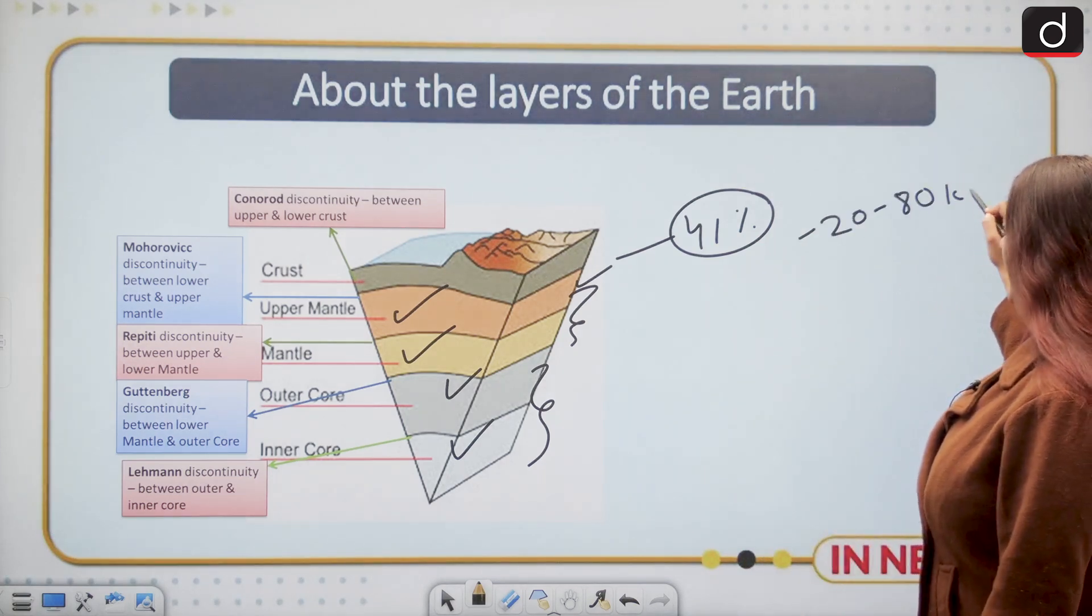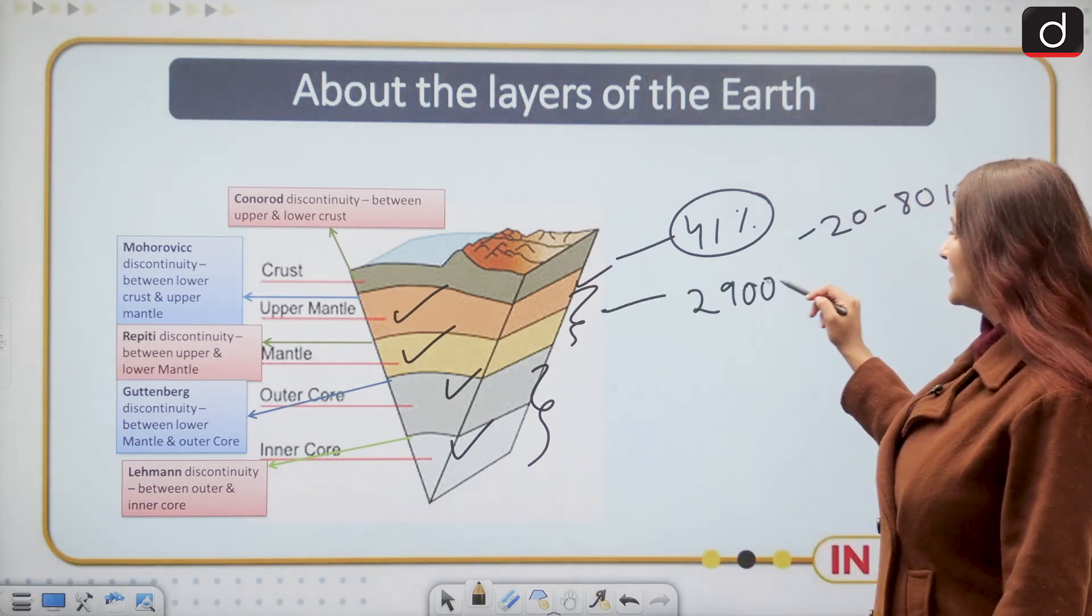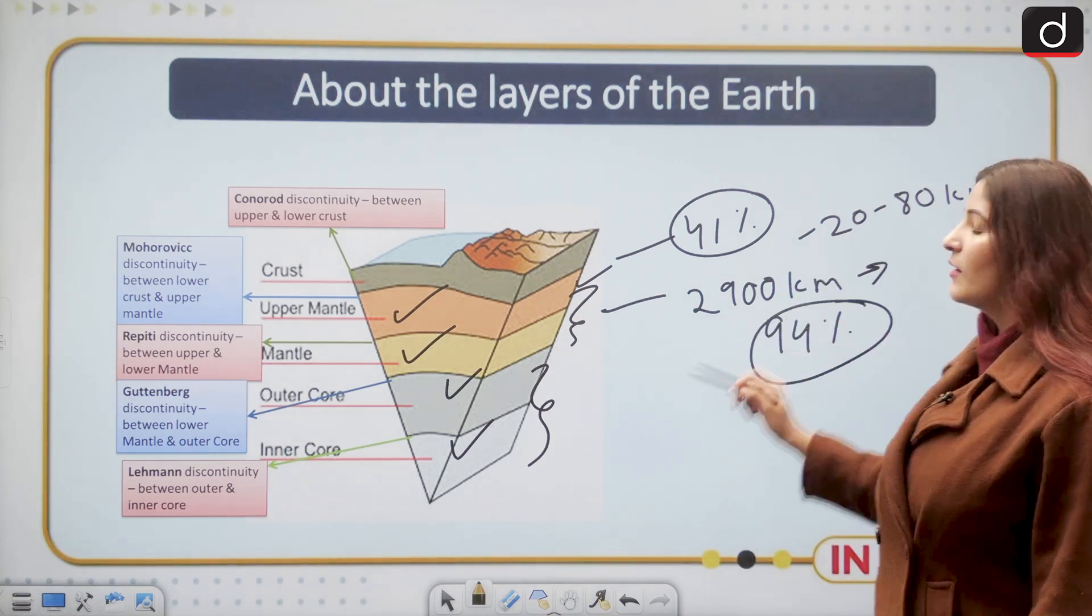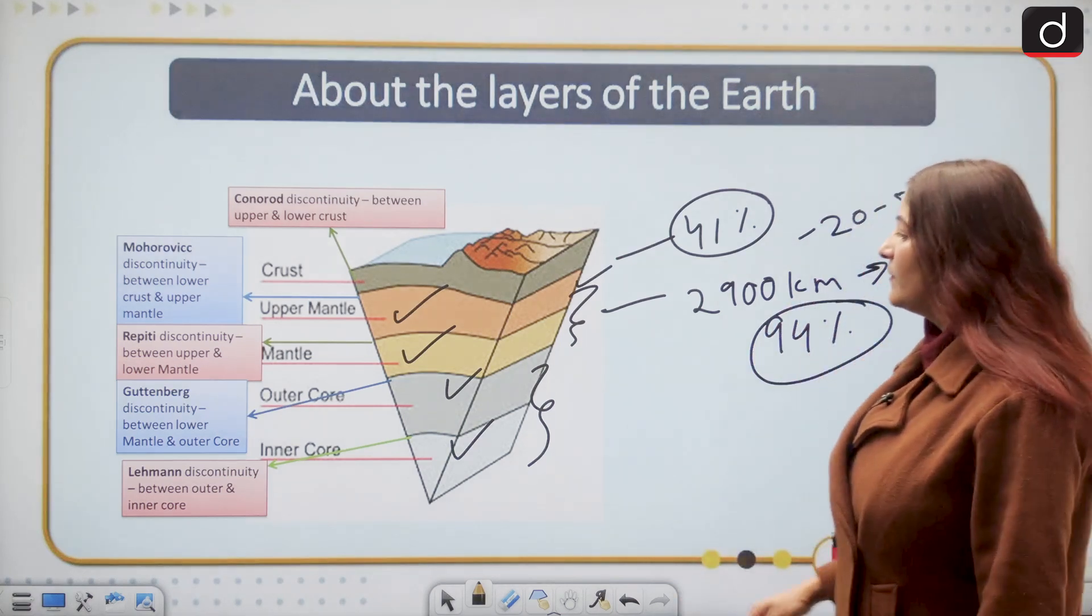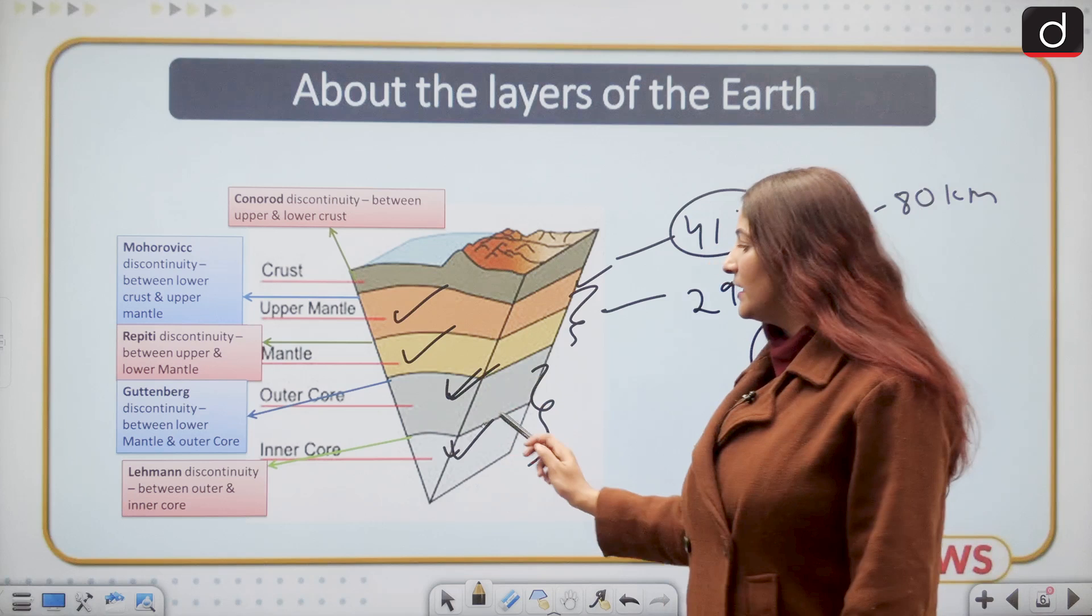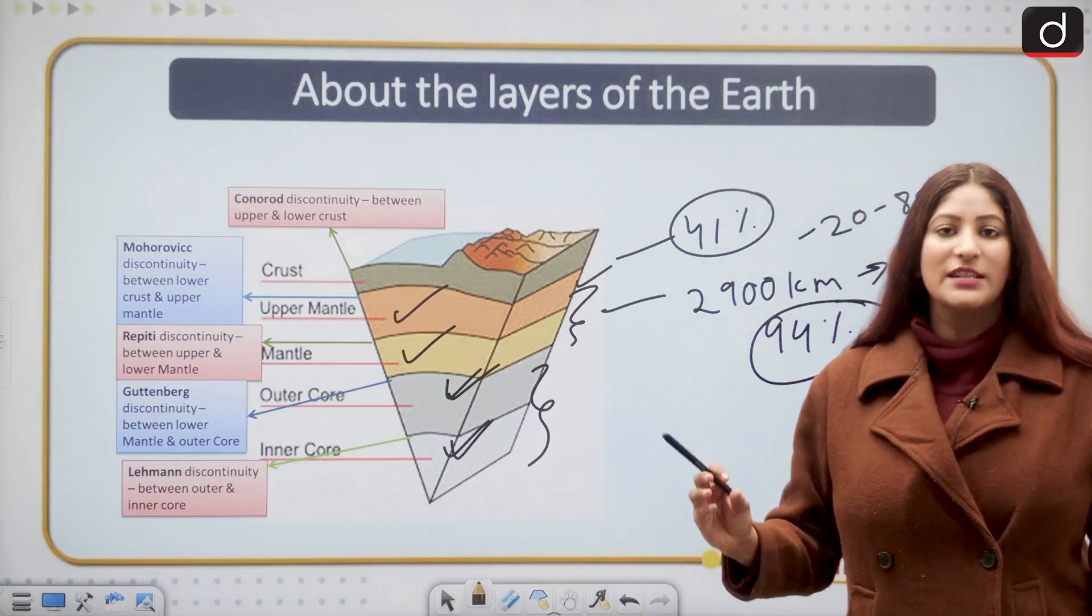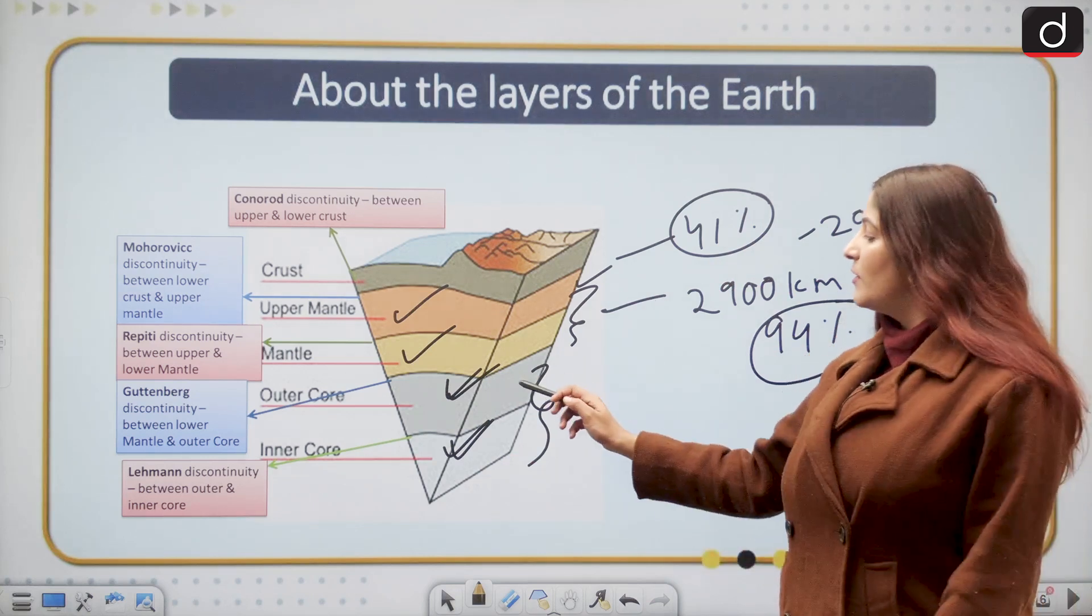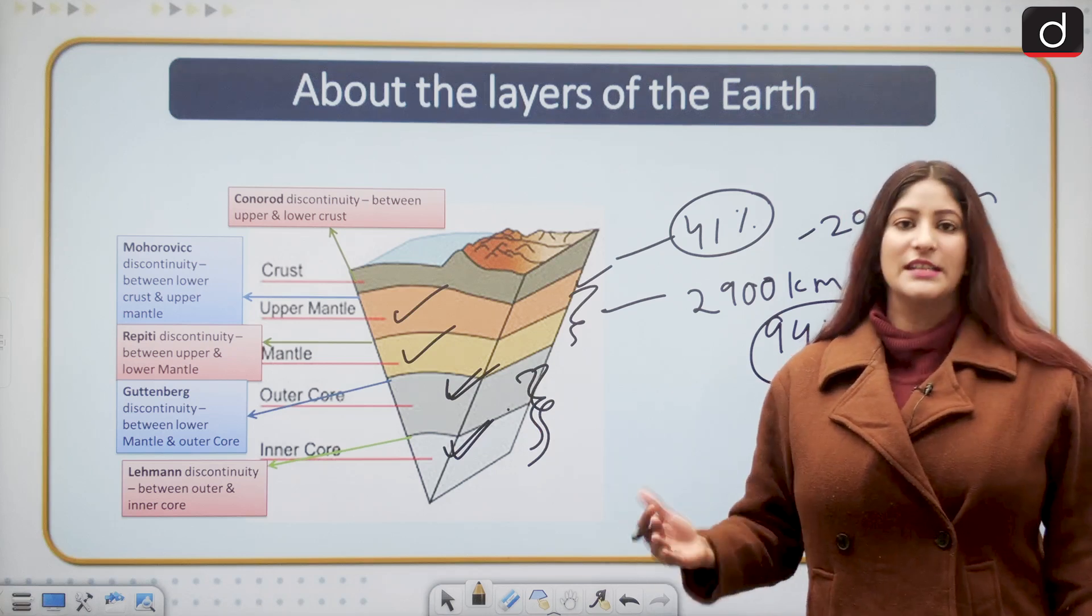Then we have the mantle. The mantle is 2,900 kilometers thick and it forms 94% of the earth's terrestrial layer. Then we have the outer core and the inner core. The outer core is the molten part and the inner core is the solid part.